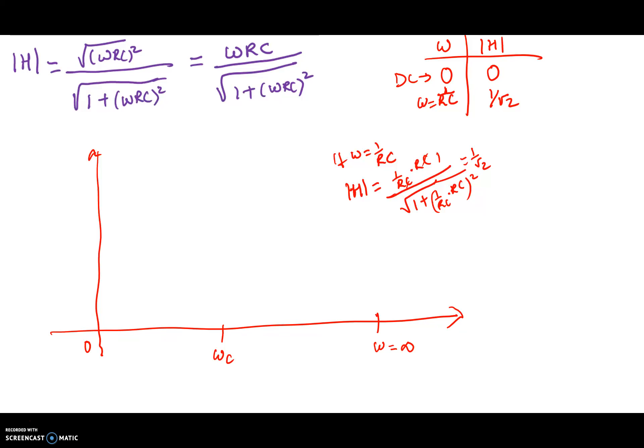What happens as ω becomes a really large number? We have a very large number on top. At the bottom, 1 added to the square of a really large number is a really large number squared. Taking the square root brings us back to a really large number. A really large number divided by a really large number is essentially equal to 1. So as ω approaches infinity, the magnitude gets closer and closer to 1.